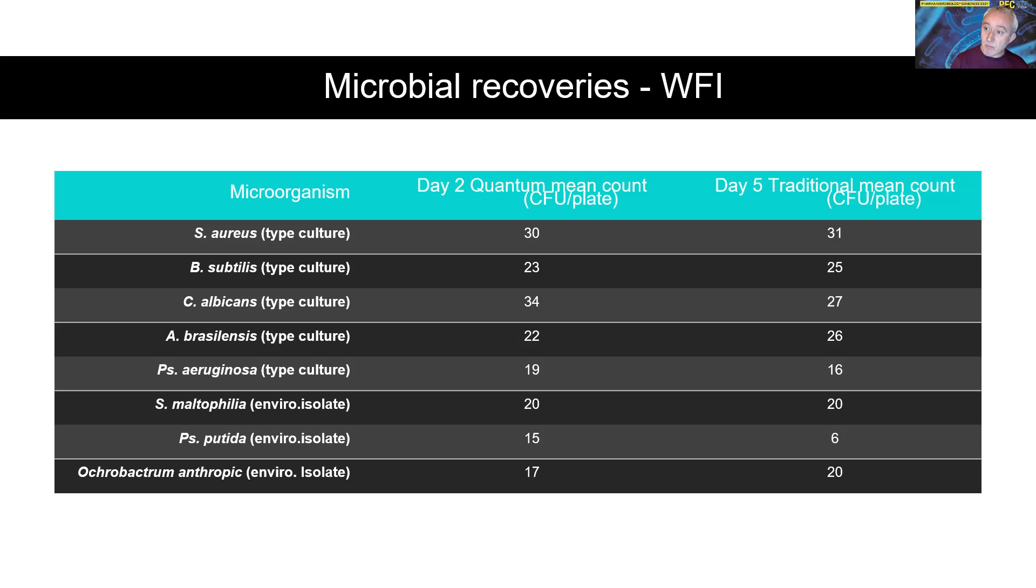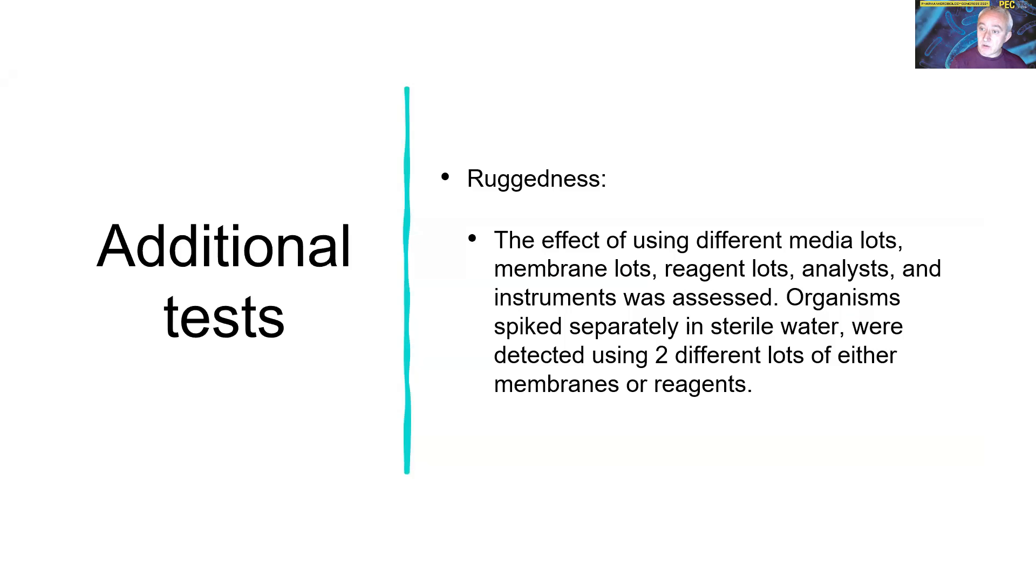Consistency is also important when we consider ruggedness. Ruggedness is introducing variation to the validation. We're looking at different lots of media, different membrane lots, different reagent lots, different analysts, different instruments to be assessed, and so on. If all of this also still comes out good, and we're still getting those kinds of acceptable recoveries, then we know we've got a method that can be subjected to the rigors of general testing.